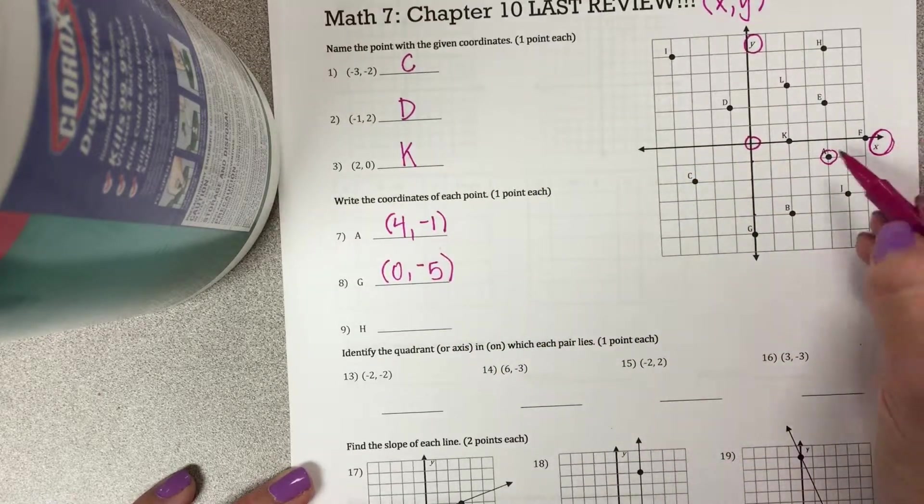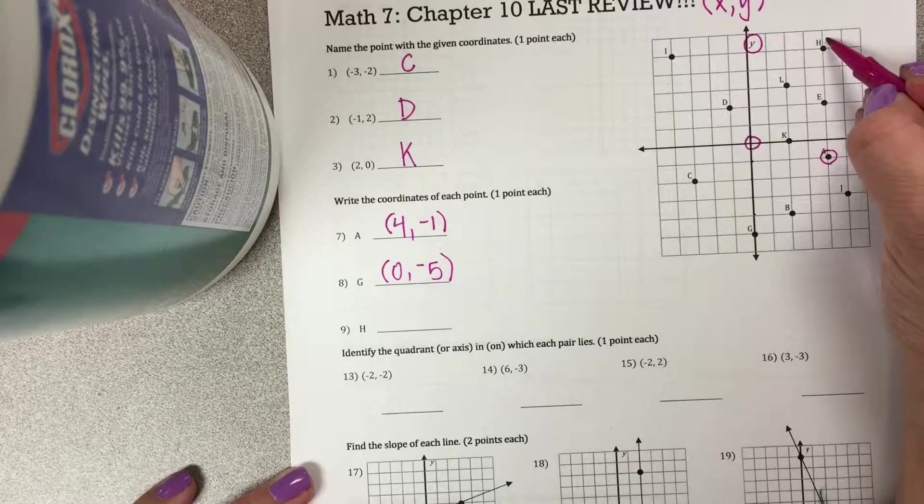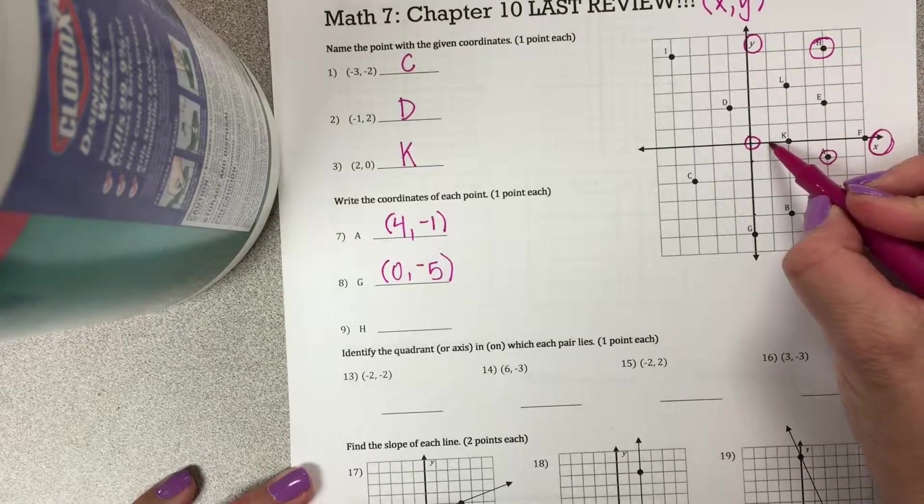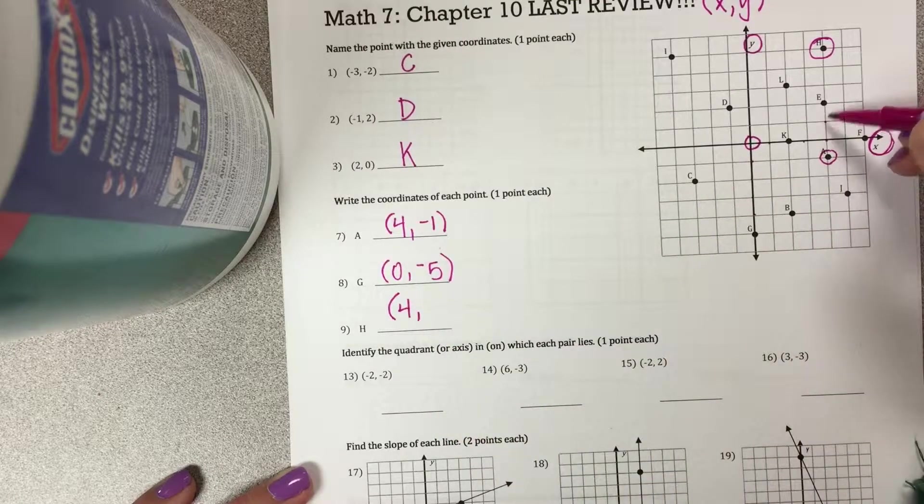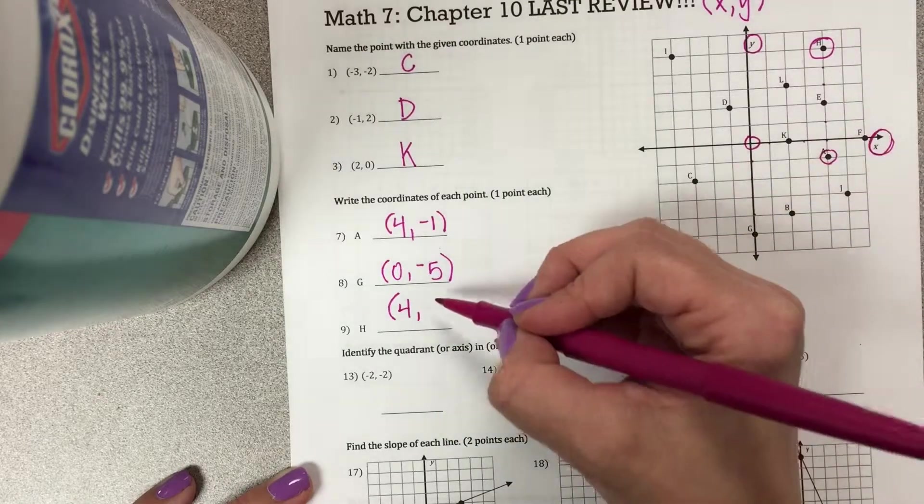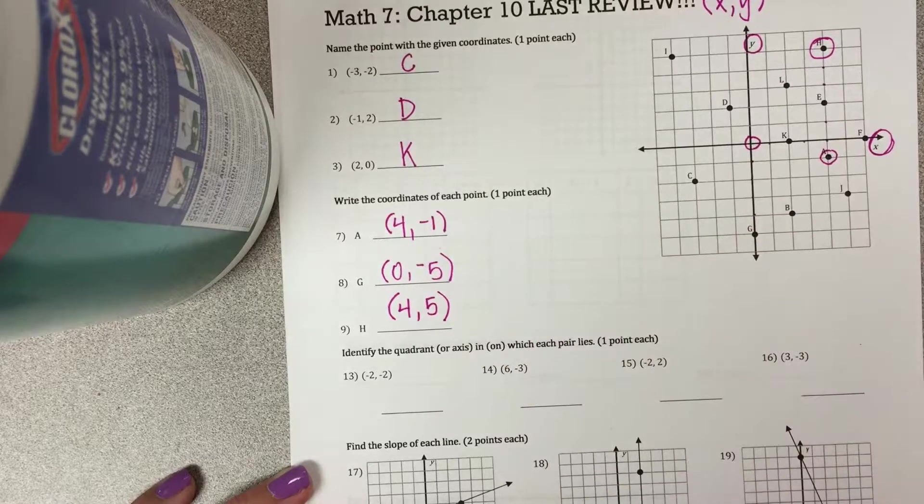And then last is H, which is way over here. So on my X, I'm at 1, 2, 3, 4. And on my Y, positive 1, 2, 3, 4, 5. And that's it.